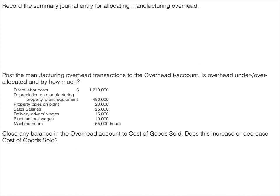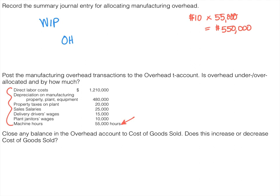The next step is to record our journal entry for allocating overhead. If we think back to that map of all those costs flowing through those T-accounts that we introduced in an earlier video, we know that when we allocate overhead we are debiting work in process and crediting overhead. So now we just have to figure out what amount. Our rate is $10, and we multiply the rate times what actually happened with the allocation base. Machine hours was our cost driver, so we multiply that times actual machine hours and get overhead allocated of $550,000. So we debit work in process and credit overhead for $550,000.